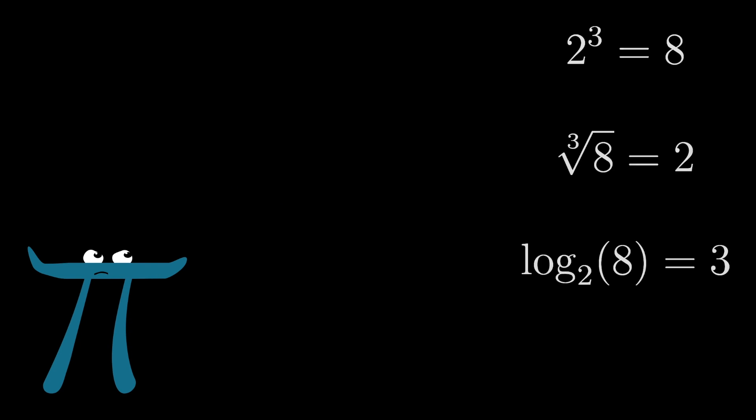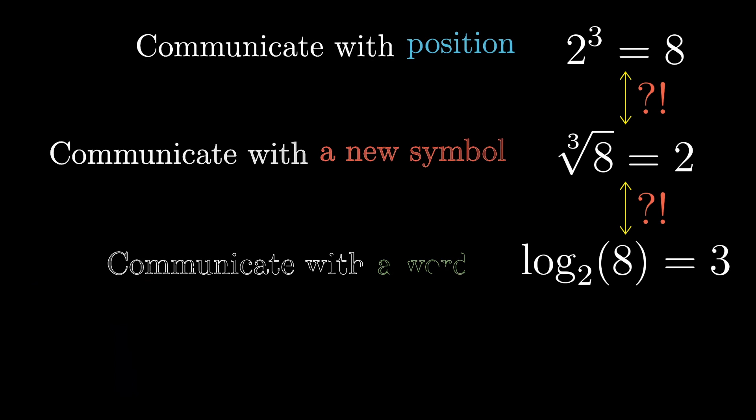If you take the fact that two multiplied by itself three times equals eight, for example, we have three separate ways to explain that relationship: two cubed equals eight with a superscript, the cube root of eight is two with a squiggly radical symbol, and the log base two of eight equals three, which we write using the word log itself. What the hell do these three ways of writing the same fact have to do with each other? Making up syntax for a concept is fine, but don't do it in three completely different ways for the same concept and force students to learn every rule about that concept three separate times.